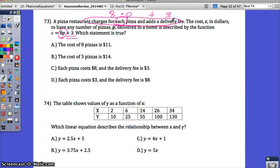So let's read our options then for determining the answer. Which statement is true? The cost of 8 pizzas is $11. The cost of 3 pizzas is $14. Each pizza costs $8 and the delivery fee is $3. Or each pizza costs $3 and the delivery fee is $8. Well, if you translate that sentence into an equation, we can see that the delivery fee is $3 and that it's $8 for each pizza. So your correct answer is C.